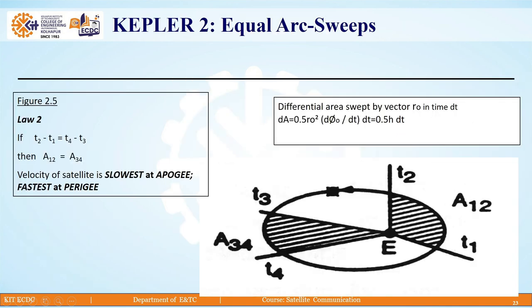Kepler's second law is about equal arc sweeps. The line joining the satellite and the center of the earth sweeps out equal area in the plane of orbit in equal time. That is, the rate at which it sweeps area A is constant. The rate of change of swept out area is given by dA/dt = angular momentum of the satellite/2m.